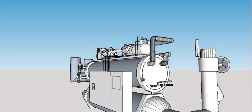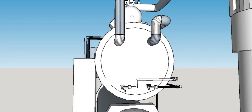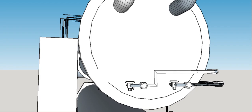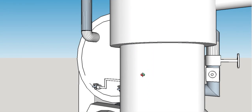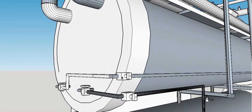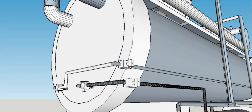On the side we have the thermostatic expansion valve, which controls the refrigerant flow to the evaporator. We have the liquid line sight glass — it shows the liquid refrigerant flowing in the circuit and it also shows the moisture level in the system.